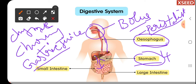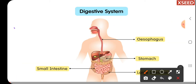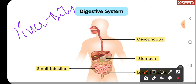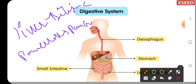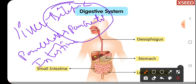When food enters the small intestine, the liver starts secreting its juices into the intestine, and the pancreas also starts secreting its digestive juice called pancreatic juice into the intestine. The intestine itself also secretes digestive juices called intestinal juices. So in the small intestine, bile juice from the liver, pancreatic juice from the pancreas, and intestinal juices all work together for the complete digestion of food.